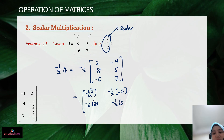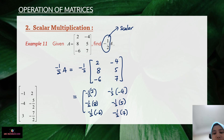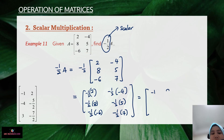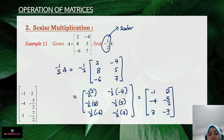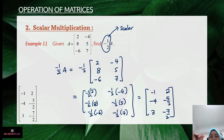We compute: negative one-half multiplied by each element of the matrix — for example, negative one-half times negative 6, and negative one-half times 7. After calculating all values, the final answer is the matrix with elements negative 1, 2, negative 4, negative 5 over 2, 3, negative 7 over 2. That is how you perform scalar multiplication for matrices — it's very easy.